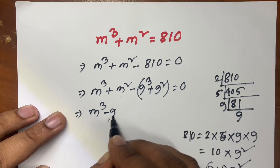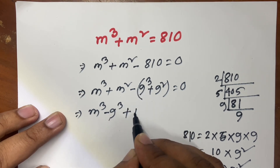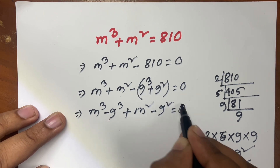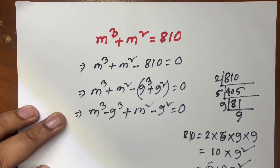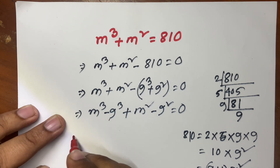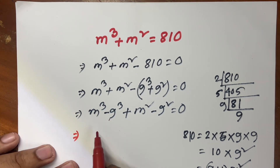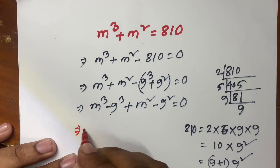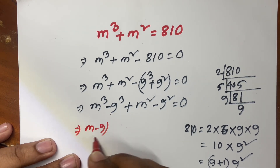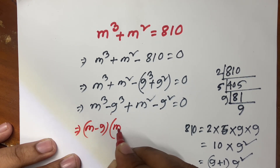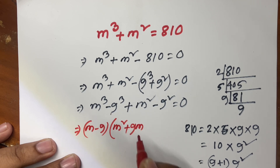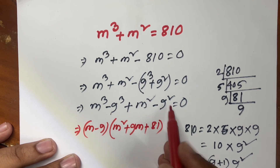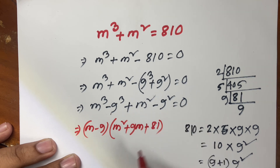I can write: m cubed minus 9 cubed, plus m squared minus 9 squared, equals 0. Now we know that m cubed minus 9 cubed equals m minus 9, times m squared plus 9m plus 81. And m squared minus 9 squared continues.